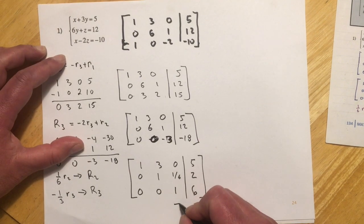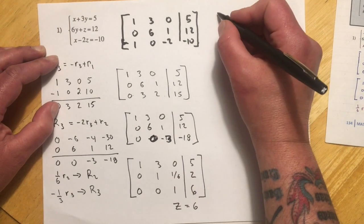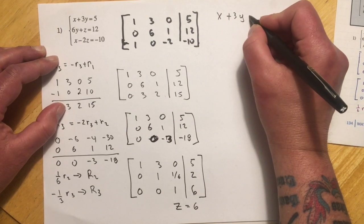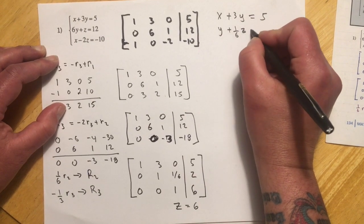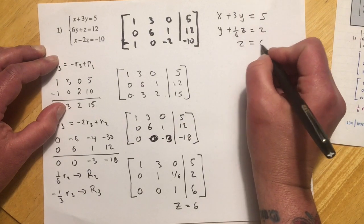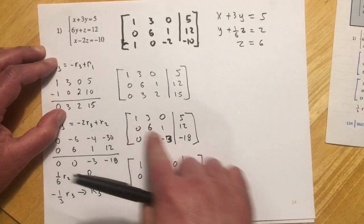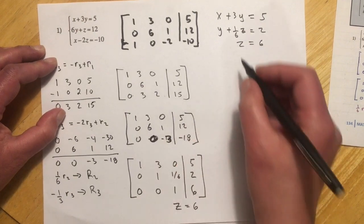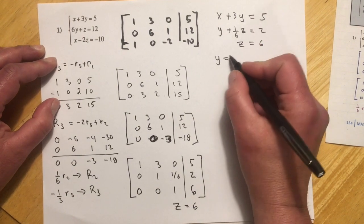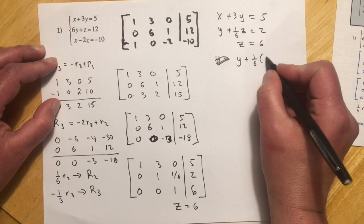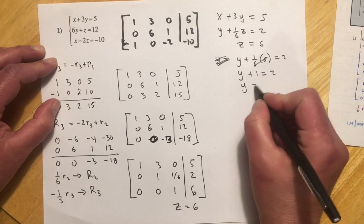So right down here now I have z equals 6. What I can do with that is then plug it into this equation. And let me write out these equations. Now I have x plus 3y equals 5. I have y plus 1 sixth of z equals 2. And I have z equals 6. So that's what this means. And now I'll just use my algebra to back solve. And really right here I could have just done this, divided the 3 over, and then plugged it in and solved it that way also. So I'm going to go ahead and put the 6 in right here. So that will be y plus 1 sixth times 6 equals 2. I cancel those. y plus 1 equals 2. So that makes y equals 1.